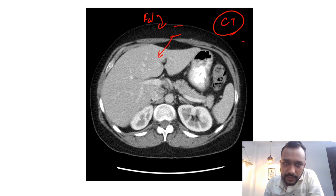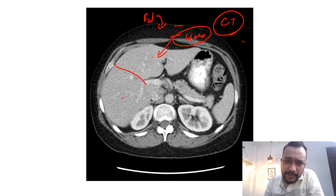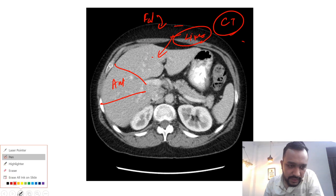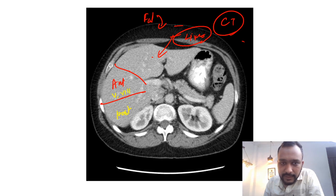This is your liver. The liver is divided into two lobes — right and left lobe — by the middle hepatic vein. In the right lobe you have anterior segments and posterior segments. Anteriorly you have segment 5 and segment 8, and posteriorly you have segment 6 and segment 7.